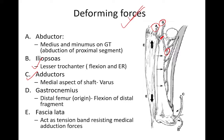The gastrocnemius inserts over the distal femur and causes flexion of the distal fragment. The fascia lata acts as a tension band which resists the medial adduction forces.